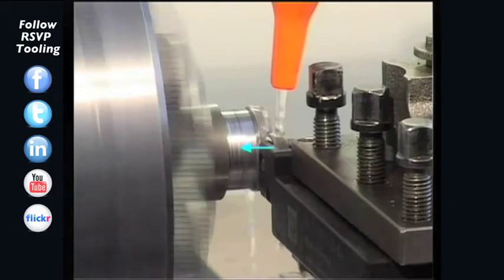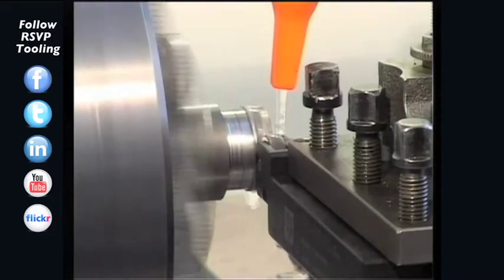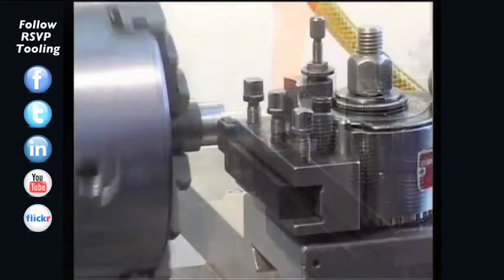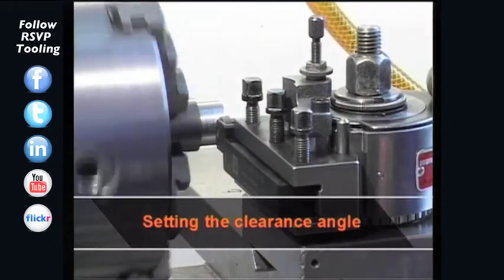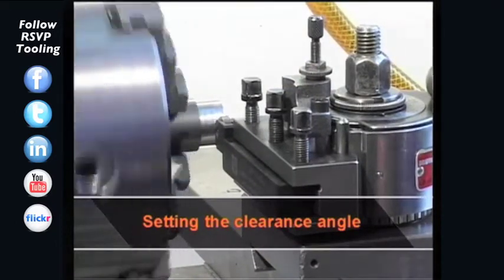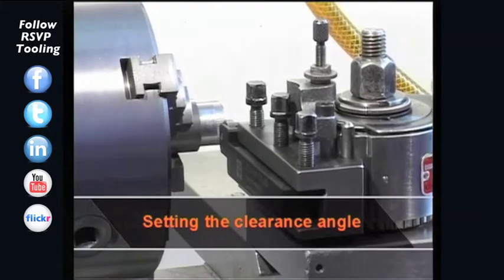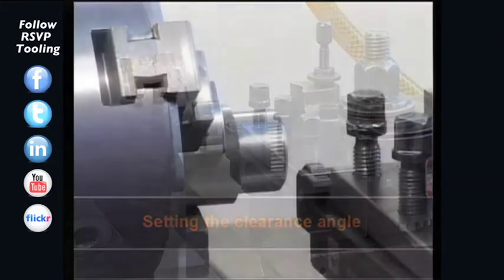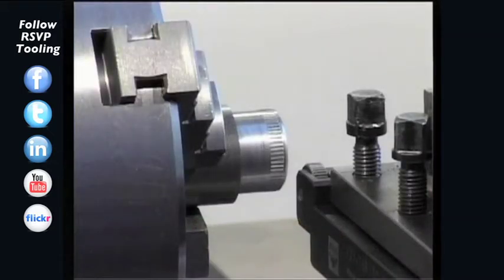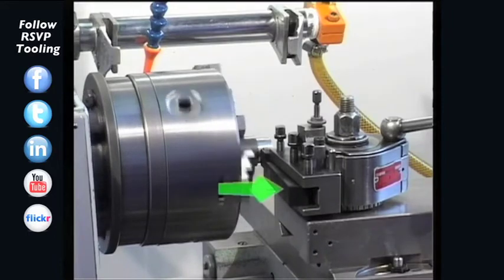In order to achieve a good knurling profile, it is necessary to set a clearance angle. The knurling tool is carefully brought into contact with the workpiece. Now the tool holder is clamped with a clearance angle of 2 degrees to the workpiece.